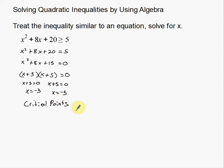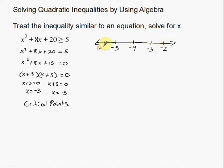These critical points — negative 5 and negative 3 — are going to be used as boundaries on a number line. I'll place them on a number line. Now I need to figure out which numbers, when plugged in for x, give a result greater than or equal to 5. These critical points give me the boundaries. With two critical points, I have three different areas that could be solutions.